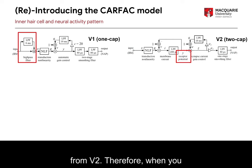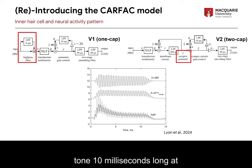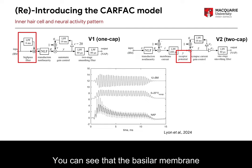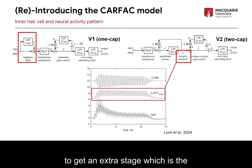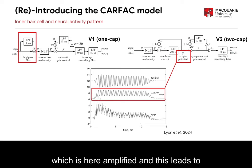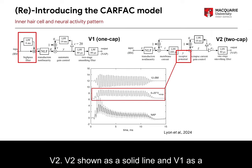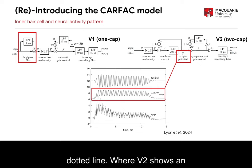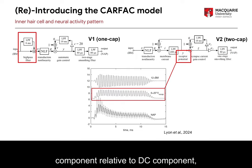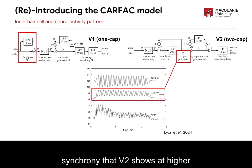Therefore, when you present a 3 kHz tone 10 ms long at 60 dB SPL, you can see that the basilar membrane responses are the same for the top trace. However, you are now able to get an extra stage, which is the voltage of the receptor potential, which is amplified here, and this leads to slightly different NAPs for both v1 and v2. V2 is shown as a solid line and v1 as a dotted line. V2 shows an onset that is slightly less prominent, and it also shows a much smaller AC component relative to the DC component, indicative of the reduced synchrony that v2 shows at higher frequencies.